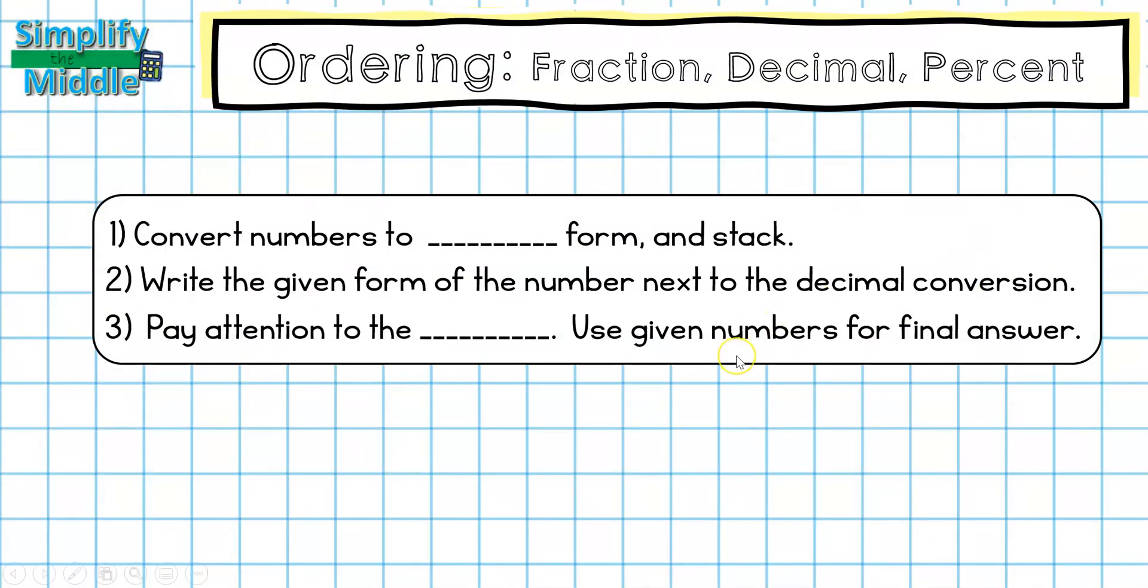Let's wrap up. We will convert numbers to our decimal form and stack them first. Then we'll write the given form of the number next to the decimal conversion, so we remember which goes with which. And then finally, we need to pay attention to what order the question asked us for, whether it's ascending or descending. And use the given numbers for the final answer, never the decimal conversions.